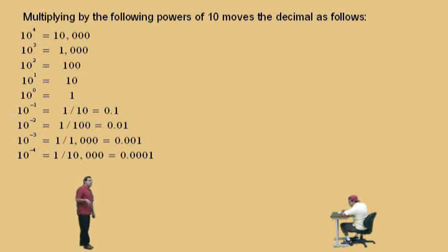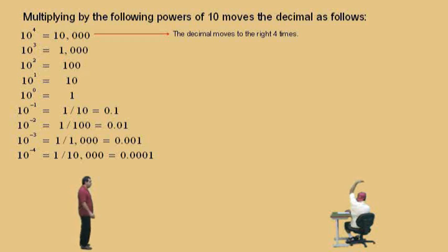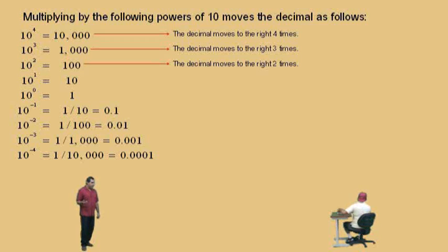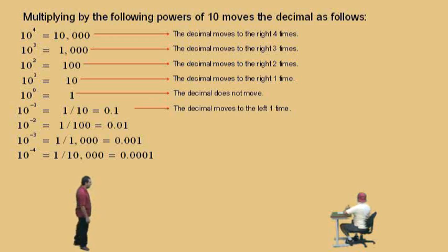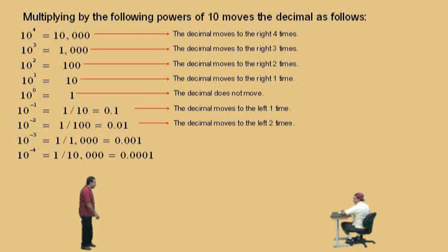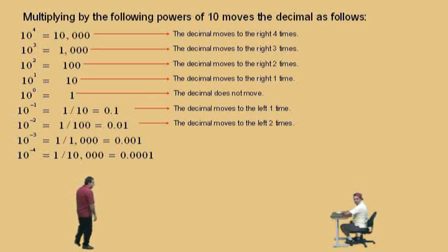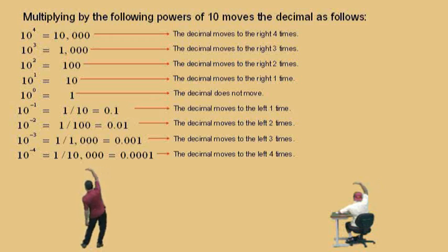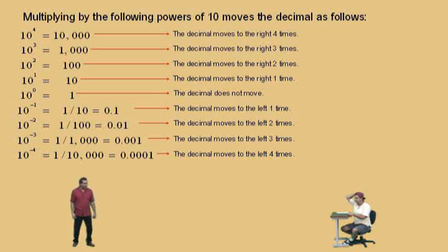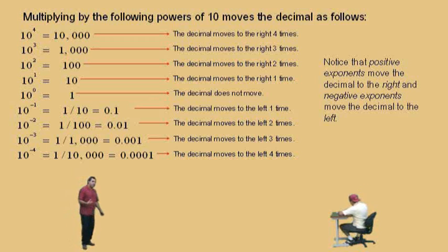Now, 10 to the 4th — if you're multiplying a number by 10 to the 4th, it moves the decimal to the right 4 times. 10 to the 3rd moves the decimal to the right 3 times. 10 squared moves it to the right 2 times. 10 to the 1st moves it to the right 1 time. 10 to the 0 doesn't move it. How about 10 to the negative 1? That's to the left. 10 to the negative 2 moves it to the left 2 times. 10 to the negative 3 moves it to the left 3 times. And 10 to the negative 4 moves it to the left 4 times. So: positive exponents move the decimal to the right, and negative exponents move it to the left.